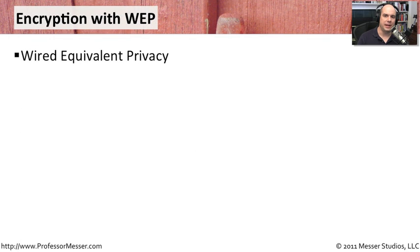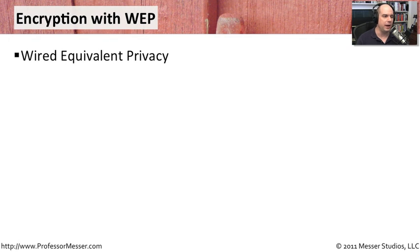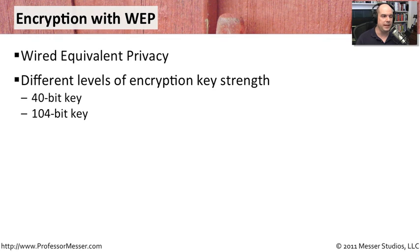When 802.11 networks first came out, we introduced an encryption methodology called WEP — Wired Equivalent Privacy. As the name implies, we wanted the same level of protection on wireless networks as we had on wired networks. This worked by setting up encryption keys in your wireless access point, either 40-bit keys or 104-bit keys, depending on which you'd like to use.